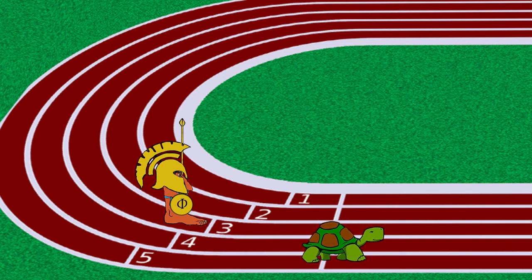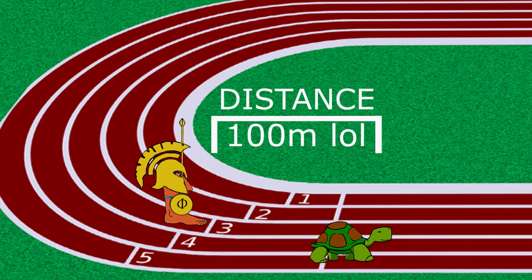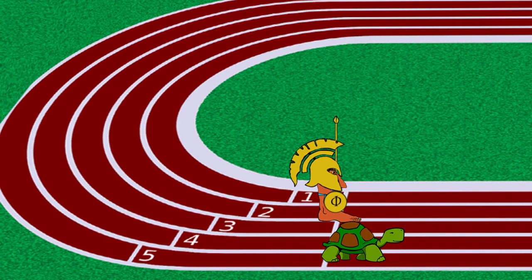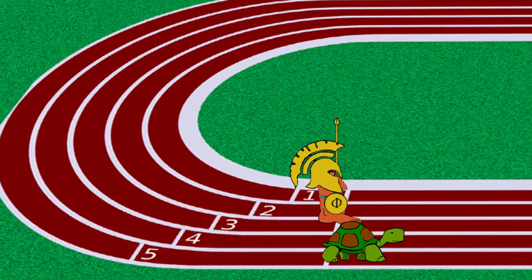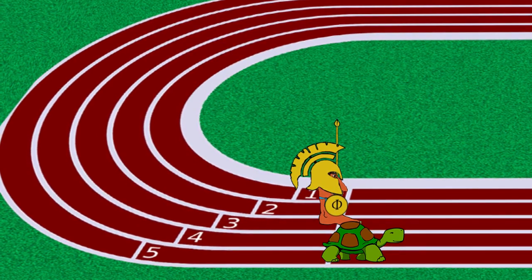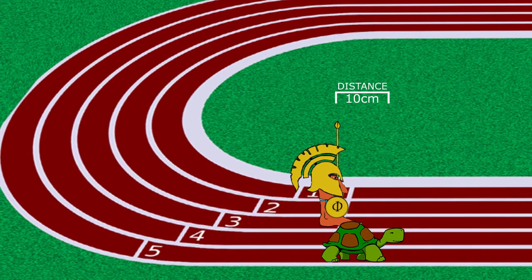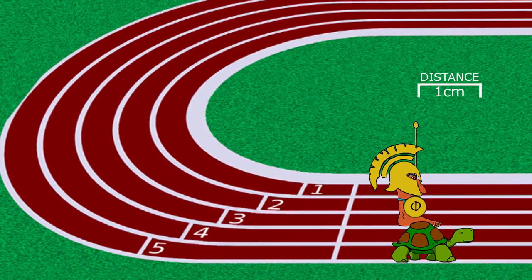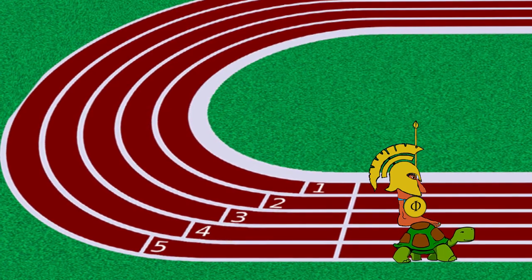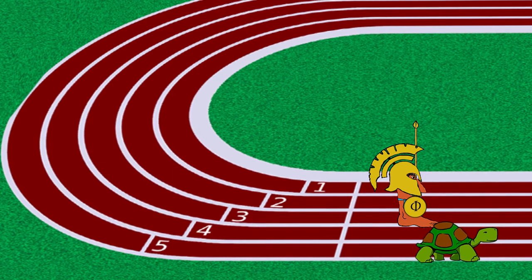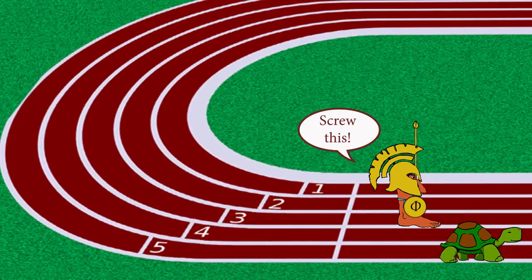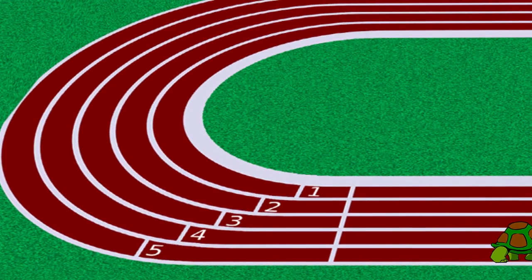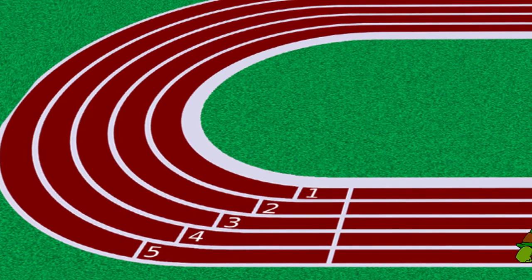The tortoise, because it is slower, gets a head start of 100 meters. After the tortoise reaches the 100 meters, Achilles, who is much faster, starts running. No matter how much head start the tortoise has, Achilles, who was the fastest warrior in ancient Greece, should easily win the race. But when Achilles reaches the 100-meter mark, the tortoise is at 100 meters and 10 centimeters. The tortoise crawled 10 centimeters more in the time it took Achilles to reach it. When Achilles reaches 100 meters and 10 centimeters, the tortoise is at 100 meters and 11 centimeters. And when Achilles reaches 100 meters and 11 centimeters, the tortoise is at 100 meters, 11 centimeters and 10 millimeters, and so on into infinity. Whenever Achilles catches up to the tortoise, the tortoise has already crawled a little bit further, so Achilles will be forced to constantly catch up to the tortoise without ever actually overtaking it.